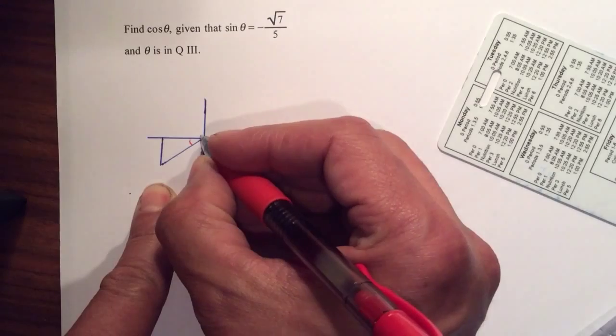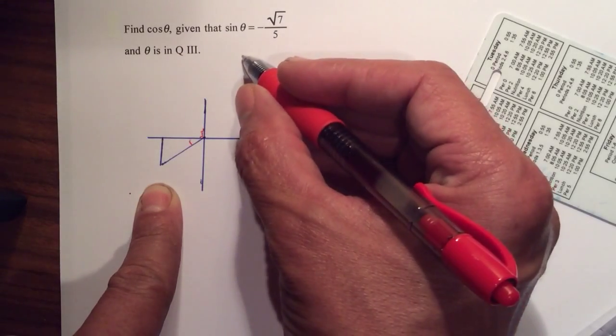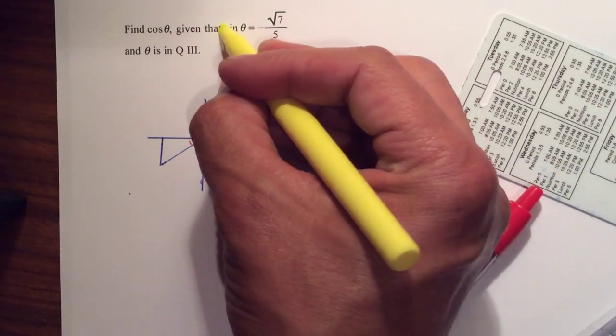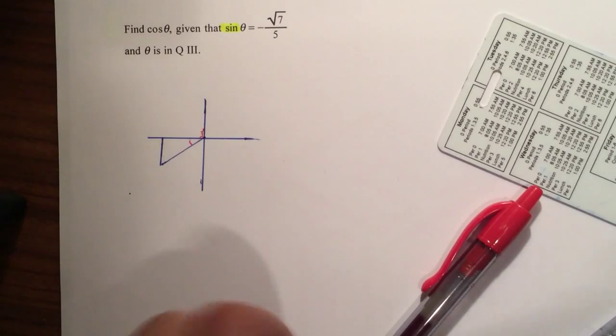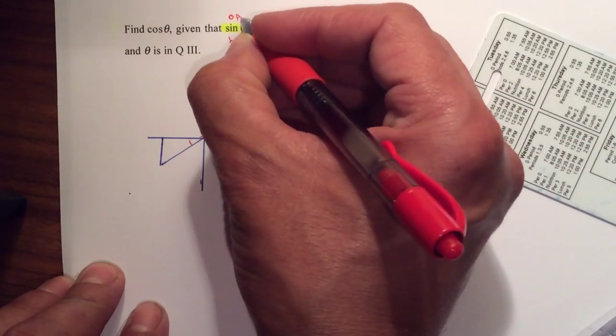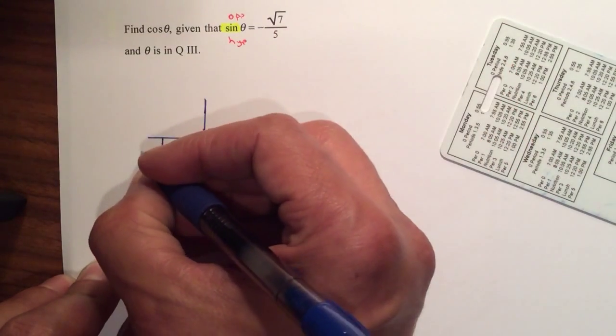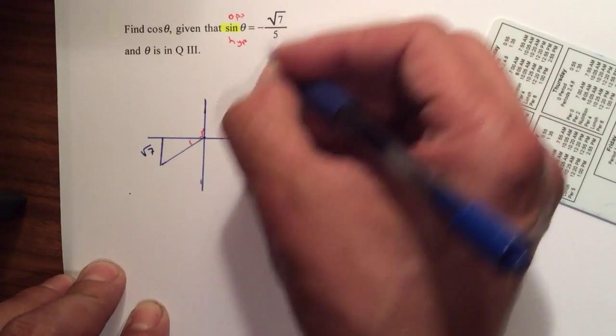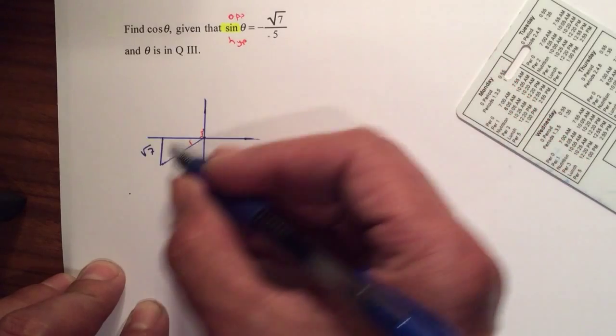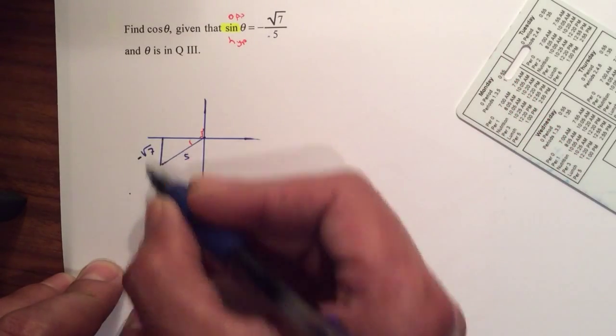So you are standing here. And the sine is your opposite over your hypotenuse. So your opposite will be square root of 7, and your hypotenuse is 5. This is negative, so therefore the negative belongs to, because we're going down, to the square root of 7.